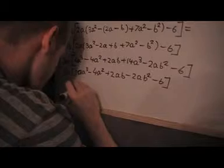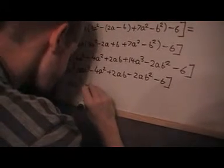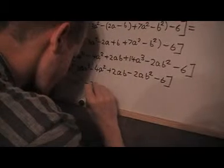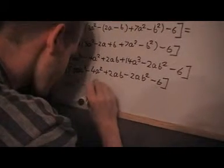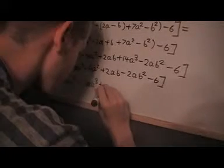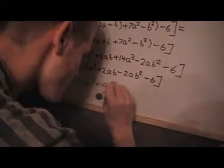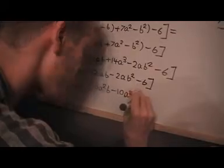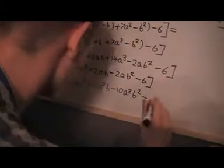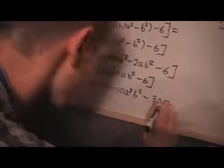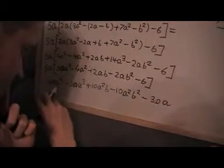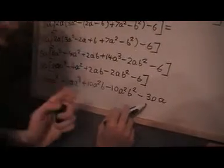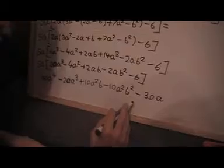Now in the last step I just multiply this out. So I get 100a to the 4, minus 20a to the 3, plus 10a squared b, minus 10a squared b squared, minus 30a. And then we can look and see if any of these combine. And we've got no like terms, so these don't combine. Minus 30a. And this will be our answer.